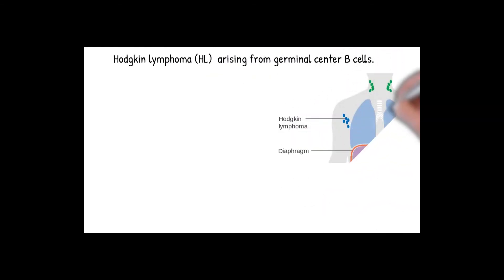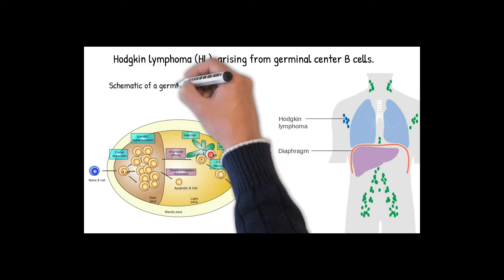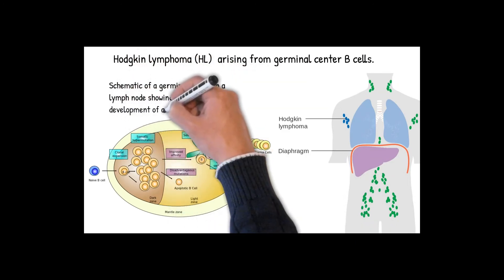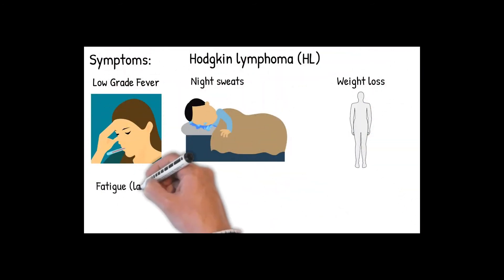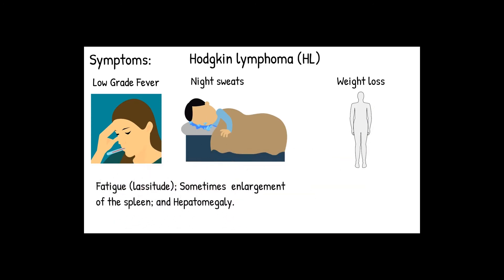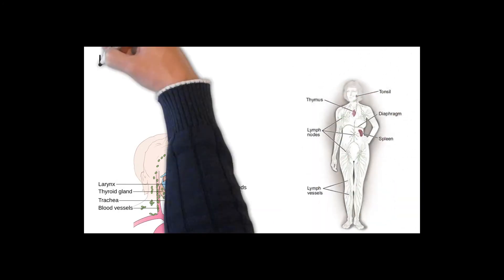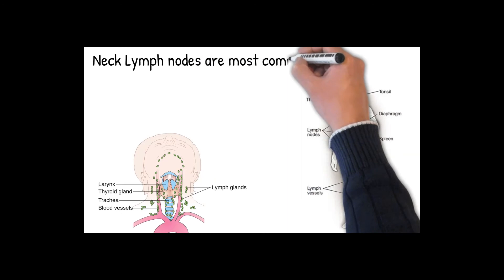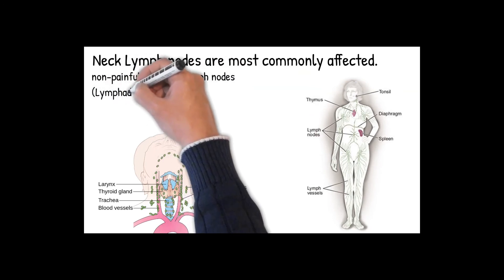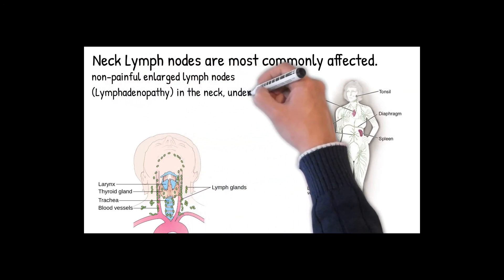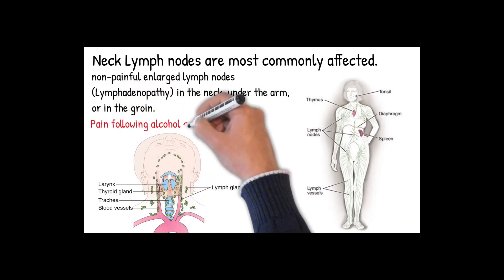Hodgkin lymphoma (HL) is a cancer that originates from white blood cells, more specifically arising from germinal center B-cells. It may present without symptoms or with symptoms including fever, night sweats, weight loss, fatigue, lassitude, sometimes enlargement of the spleen, and hepatomegaly. The most common site of initial involvement is the neck region — cervical, supraclavicular, and anterior mediastinal lymph nodes. Often non-painful and large lymph nodes present as lymphadenopathy in the neck, under the arm, or in the groin. Affected regions may be itchy. Enlarged lymph nodes are sometimes noticed on a chest radiograph. Pain following alcohol consumption is uncommon.